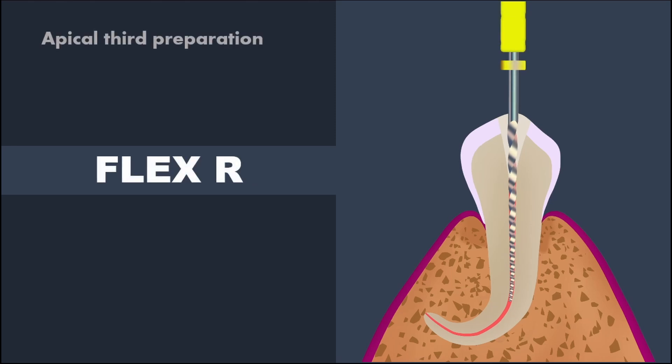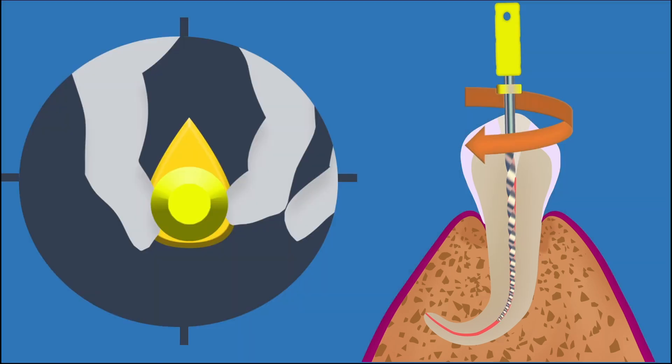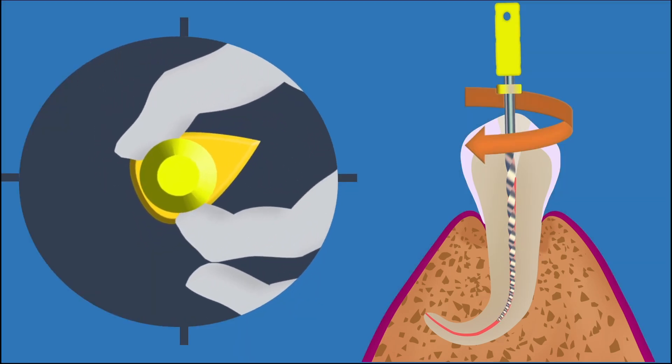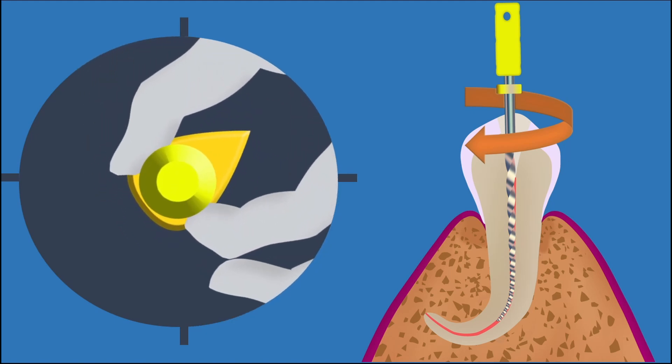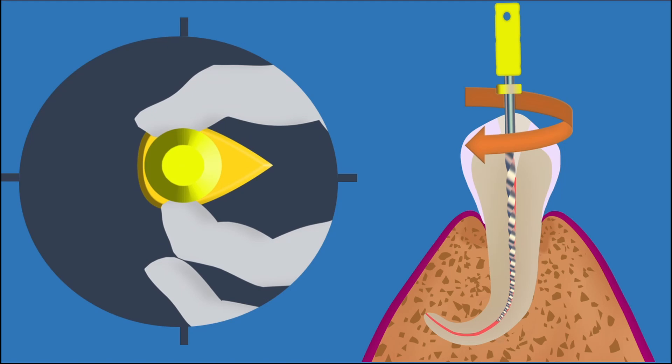Then the Flexor file is used for preparation of the apical one-third of the curved portion of the canal. A typical pattern is recommended for the use of cleaning and shaping. Unlike most other conventional cleaning and shaping techniques, balanced force technique recommends the use of rotating file inside the root canal.